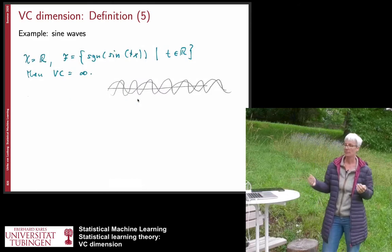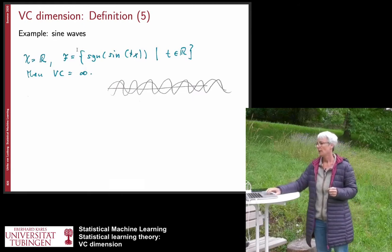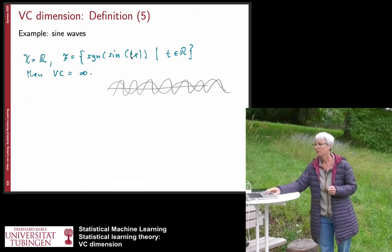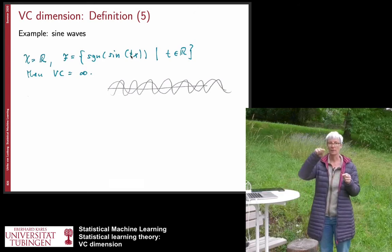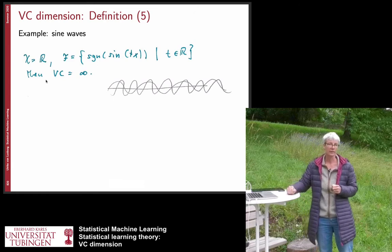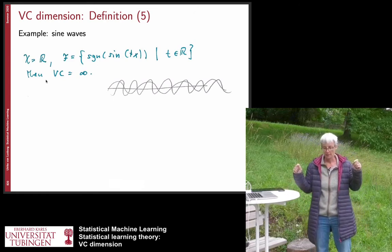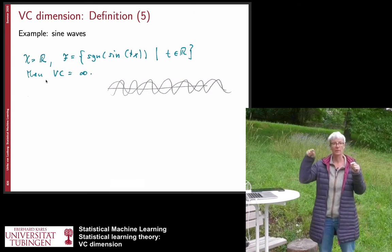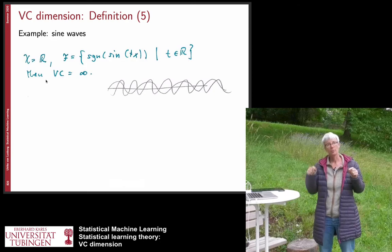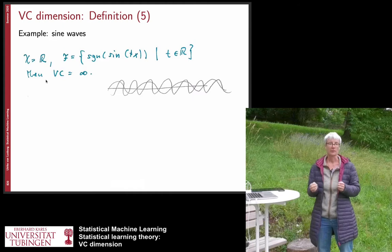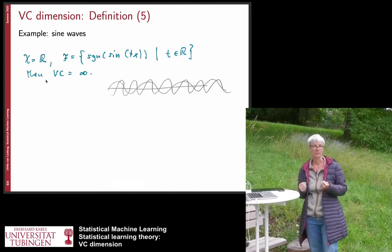One last example: our space is R and the function class is all sine waves with different frequencies, parameterized by T. For this function class the VC dimension is infinite, because for any n you can place points and choose a sine wave of sufficiently high frequency to realize all possible labelings on that dataset.